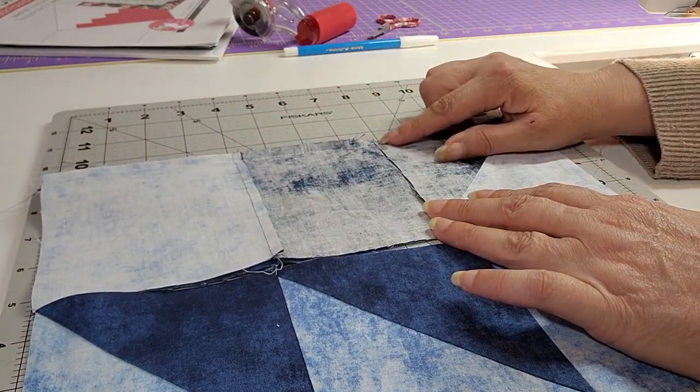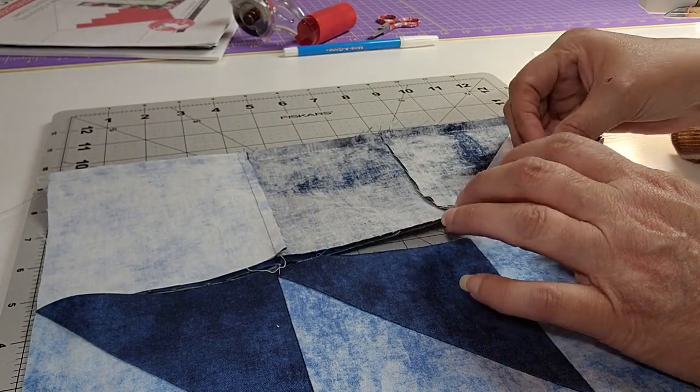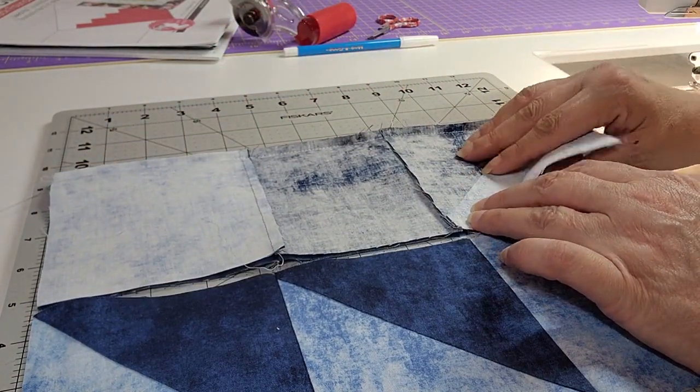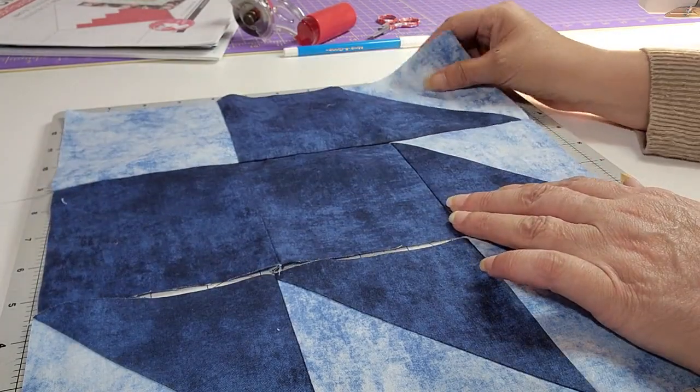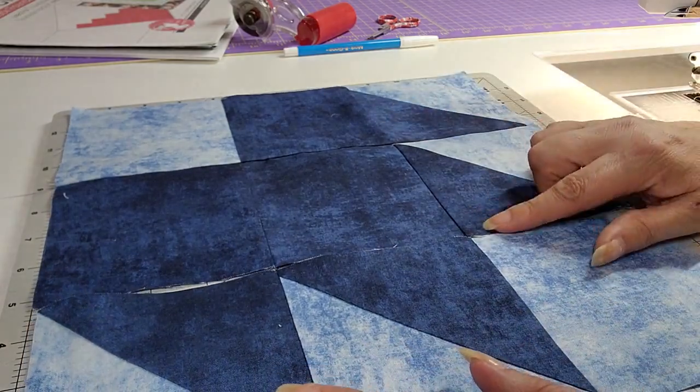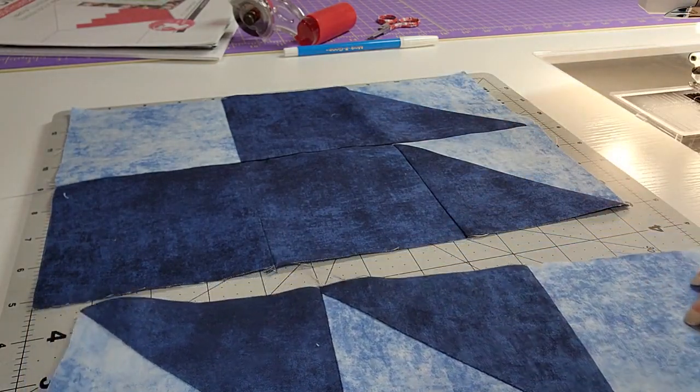You'll put those right side to right side, line up your rows, stitch from one end to the other with a quarter of an inch stitch. Then you'll add your bottom the same exact way.